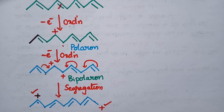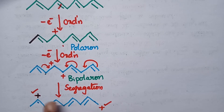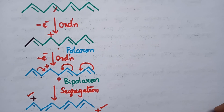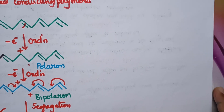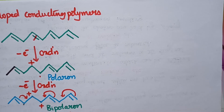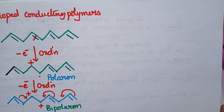This is the mechanism of p-doped conducting polymers. Due to the electron-deficient positive charges, electrons always migrate within the polymer and thus the conductance levels are improved to a greater extent. Next, let us discuss the conductance mechanism of n-doped conducting polymers.